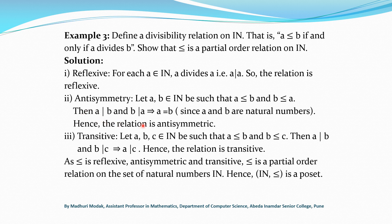If it were a set of integers, we could not write this. For example, if A is 2 and B is -2, then 2 divides -2 and -2 divides 2, but 2 and -2 are not equal. But here it is a set of natural numbers, so there are no negative numbers. If A divides B and B divides A, then A and B are equal. Hence the relation is antisymmetric.